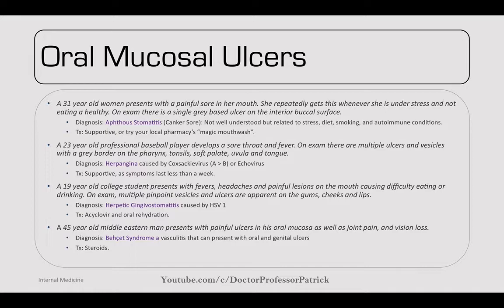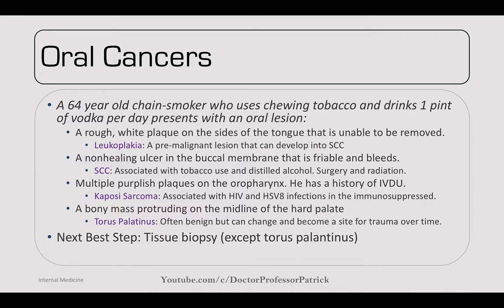Now oral cancers — a 64-year-old chain smoker who uses chewing tobacco and drinks one pint of vodka per day presents with an oral lesion. If it's a rough white plaque on the sides of the tongue that can't be scraped off, that is leukoplakia — a pre-malignant lesion that can develop into squamous cell carcinoma. It's different than oral thrush, which you will be able to scrape off. A non-healing ulcer in the buccal membrane that's friable and bleeds is more likely squamous cell carcinoma, associated with tobacco use and distilled alcohol. Treatment is surgery and radiation.